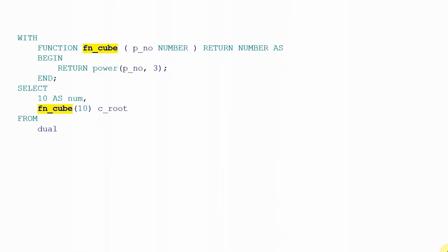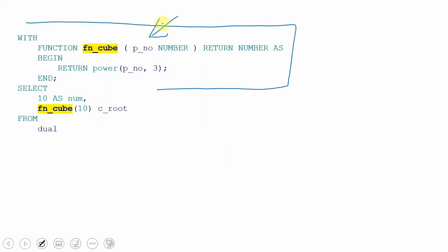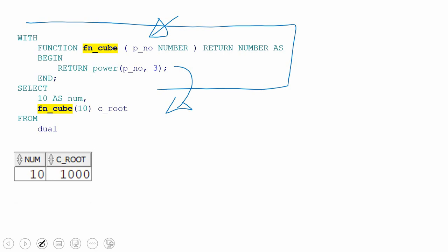This video is a continuation of that, and I want to cover one small additional piece of information about the WITH clause. Here is a very simple example — a function written in the WITH clause that takes a number as input and returns that value to the power of 3. What we are going to learn is that whenever we use a statement containing a WITH clause as a subquery, or as part of a DML statement, we will get an error, and we will also see how to resolve that error.